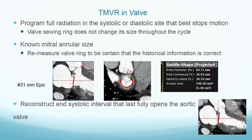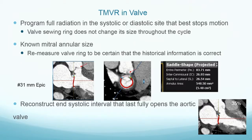Here's an example where we have a known mitral annular size by history, but sometimes the history is wrong. So we literally go ahead and map it out and get the actual size. After we achieve that and confirm we know that is the valve, we want to reconstruct the end-systolic interval, and we choose this arbitrarily at the point where the aortic valve is still open — not when it starts to close.